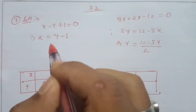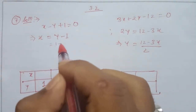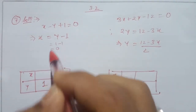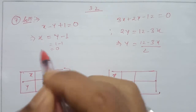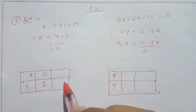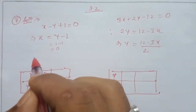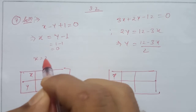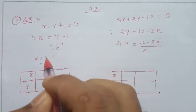That first value equals 1 minus 1, so the second value equals 2. With y equals 2, we substitute back.